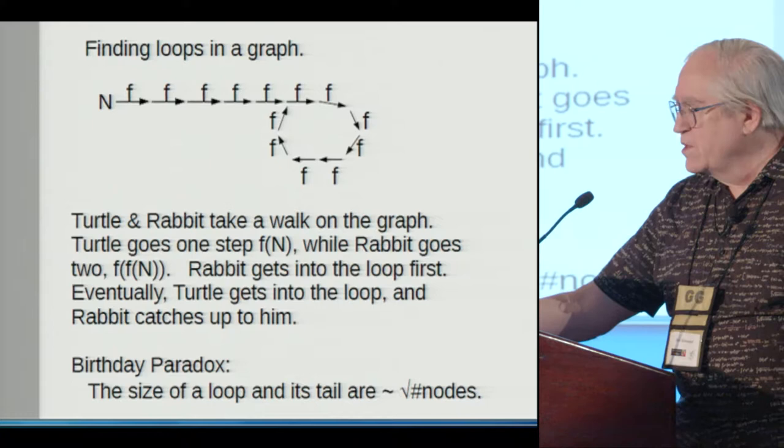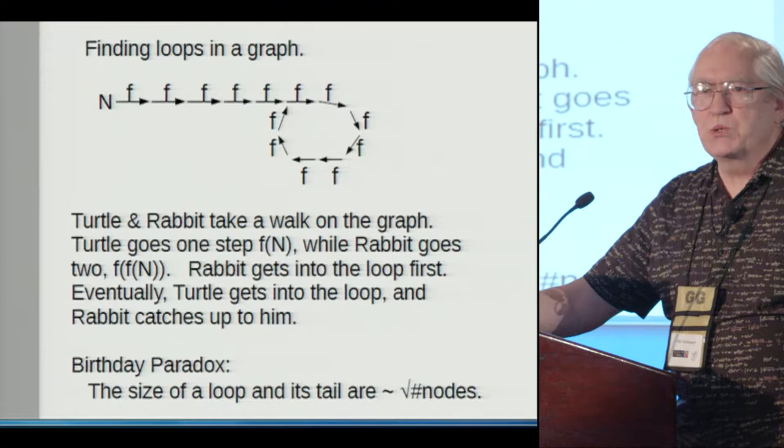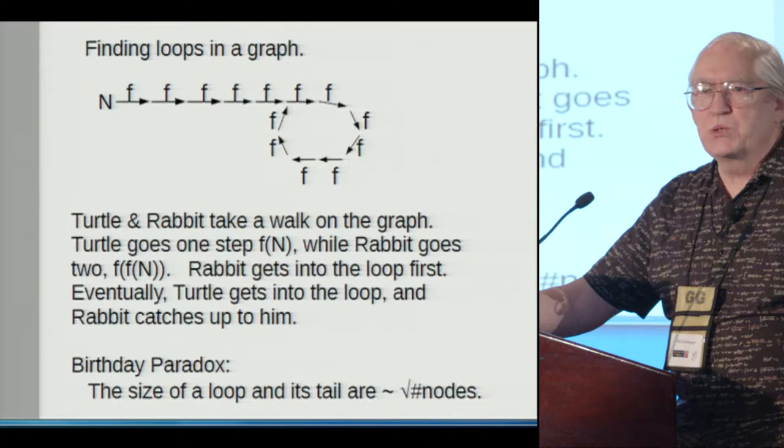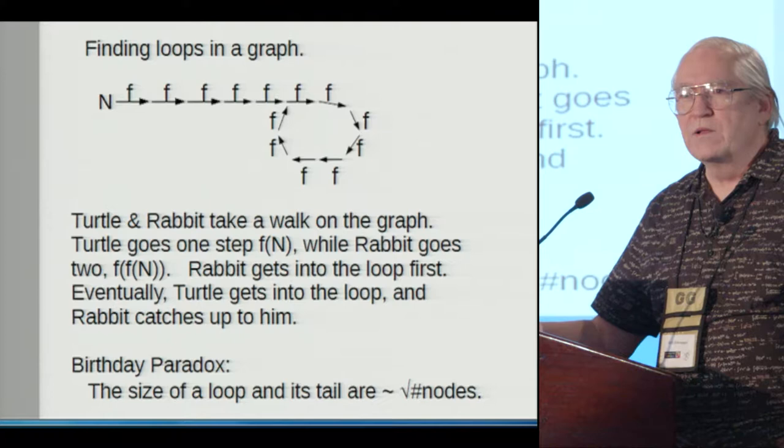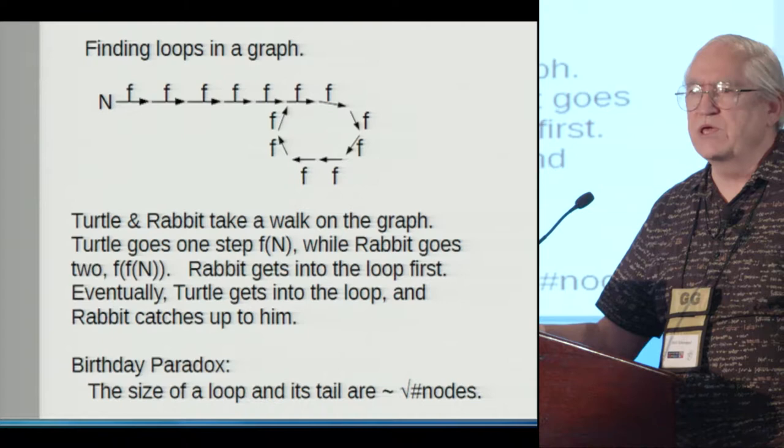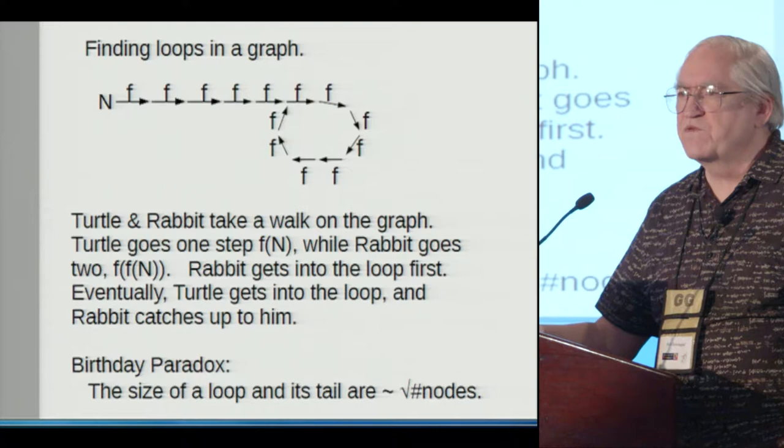They both start out at n, and turtle makes one step, and then rabbit makes two steps. And so rabbit runs way ahead of turtle. Rabbit eventually falls into the loop. And after a while, turtle will fall into the loop as well. And then rabbit will catch up to turtle from behind. And you will notice that because the number that's keeping track of rabbit and the one that's keeping track of turtle are now equal. That's your key. That's the only storage you need for just a couple of values for rabbit and turtle. You also want a counter to find out how long it took them to get the match.